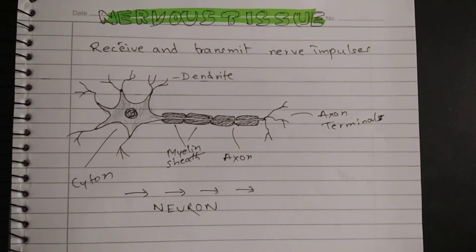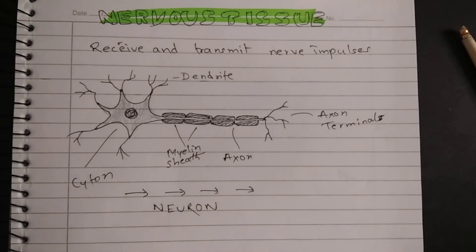To recapitulate, we covered the various types of animal tissue: epithelial tissue, connective tissue, muscle tissue, and nervous tissue. That's all for this lesson. Thank you.